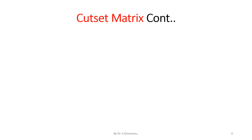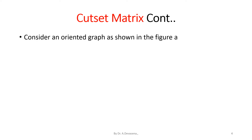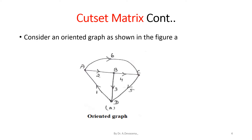Consider an oriented graph as shown in figure A. This graph comprises of four nodes A, B, C, and D, and has six branches: branch 1, branch 2, branch 3, branch 4, branch 5, and branch 6.